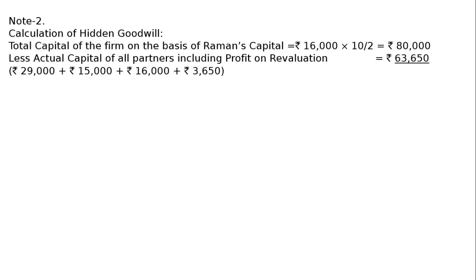The total actual capital is Rs. 63,650. If any general reserve or profit reserve appears on the liability side, it is also added and deducted from the expected capital. Likewise, any advertisement suspense account, goodwill, or patents to be written off on the asset side are also deducted. The goodwill of the firm is therefore Rs. 16,350.